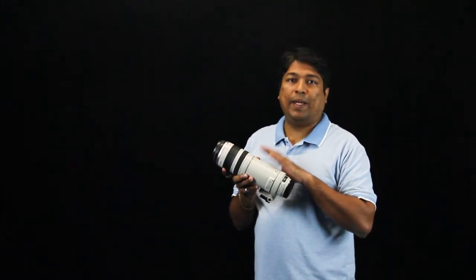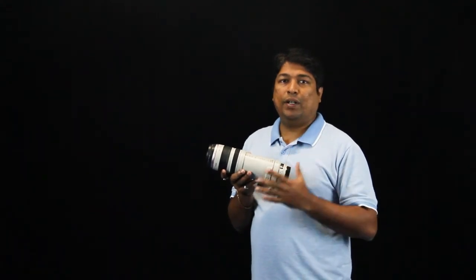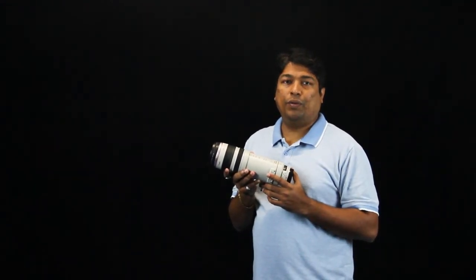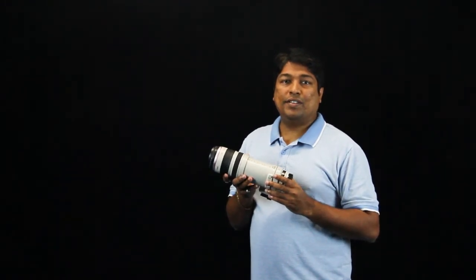So 400mm is the max focal length I can get. I will set my shutter speed to 1 divided by 400, and then I don't have to worry about getting blurry images. That's all about shutter speed. I hope you understood the concept.